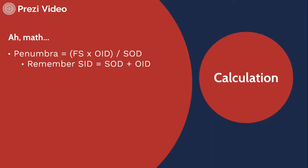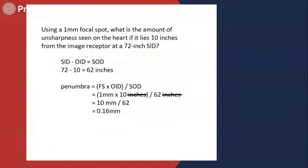We have to remember that the registry will often try to trick us by giving us the SID but not the SOD. Just remember that the source to image receptor distance equals the source to object distance plus the object to image receptor distance. So if you're given the SID and the OID but not the SOD, you can subtract the OID from the SID to get the SOD.